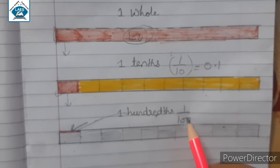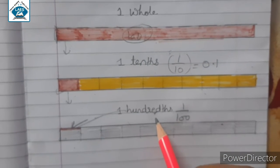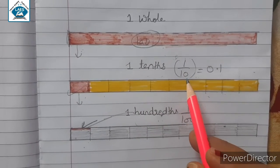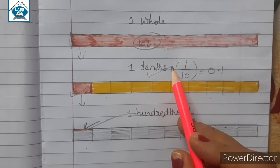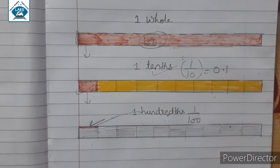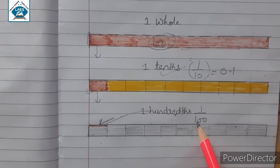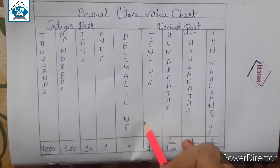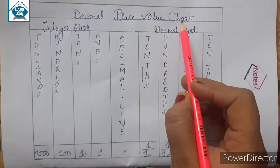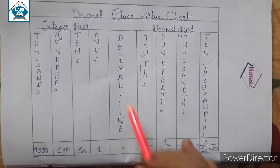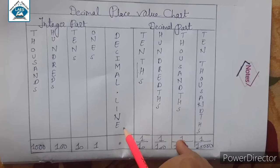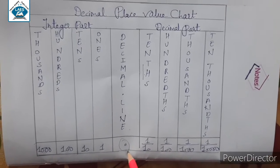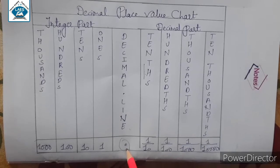So these are the decimal concepts. Tens and hundreds are the places of the decimal numbers. As I have told you, 1 upon 10 is known as one tenths, and hundredth means 1 upon hundred. Here is the decimal place value chart, and the main important thing is the decimal point. You can see here a point — it is known as the decimal point.